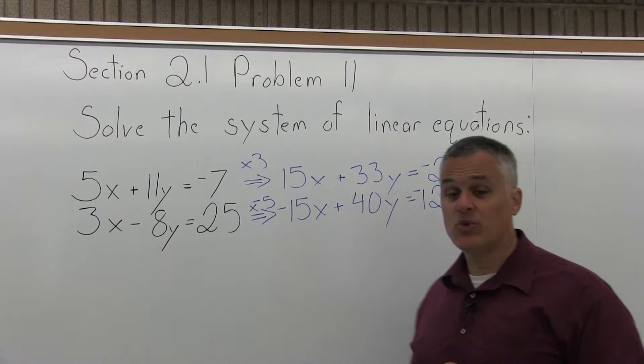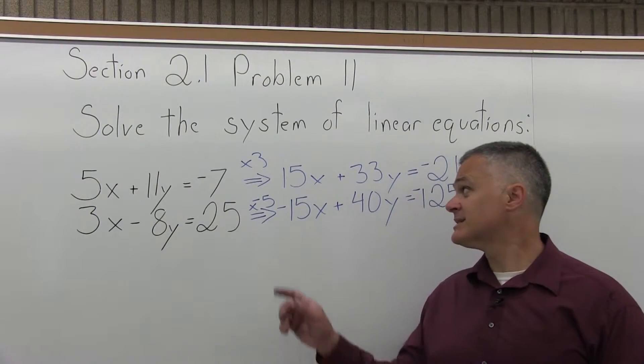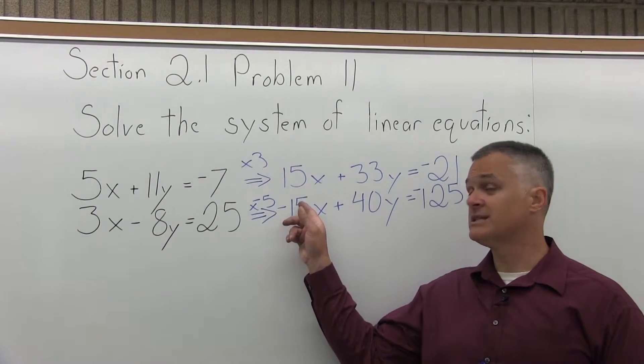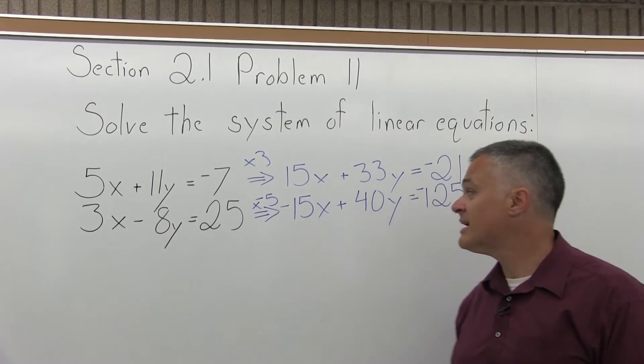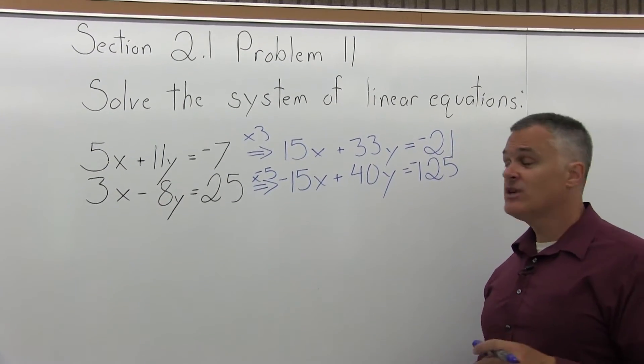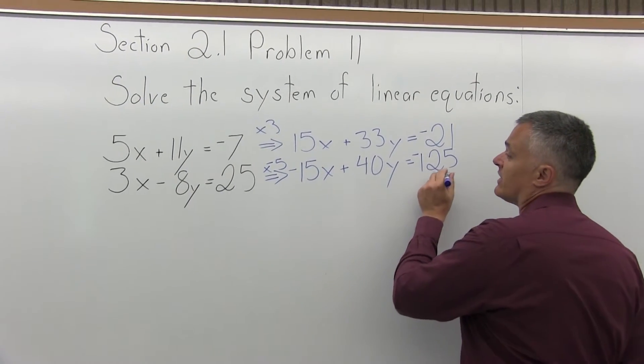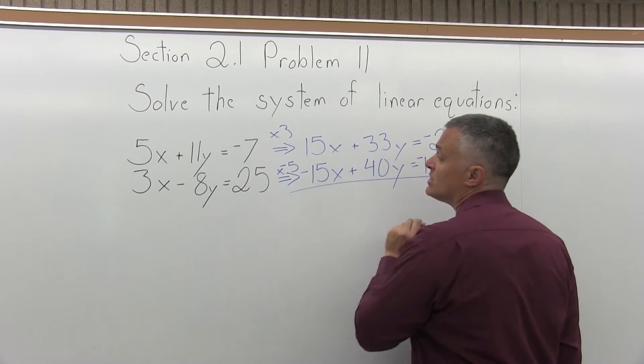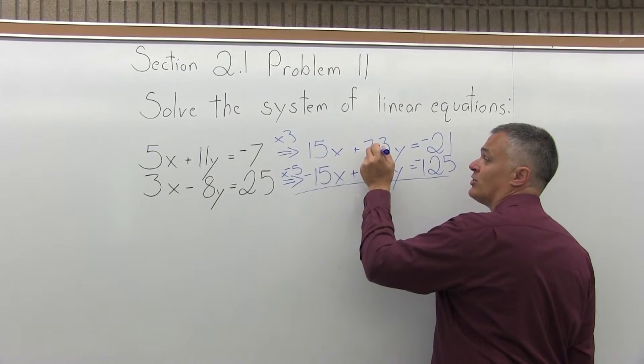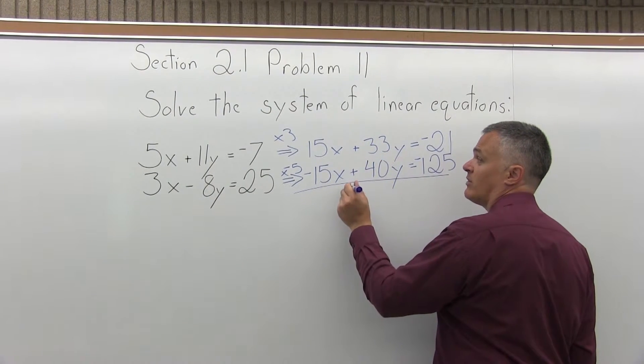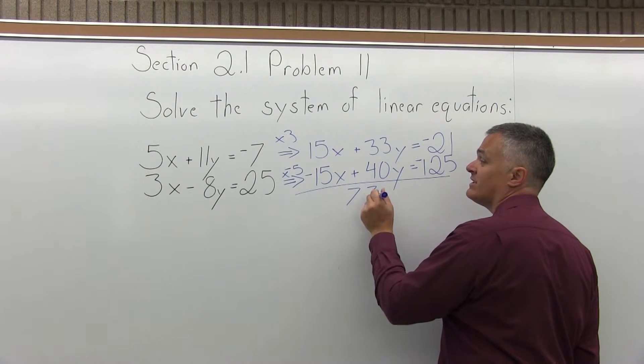So now step 1 is complete. One of my variables has the same number in front, but with opposite signs. I have a positive 15x and a negative 15x. Step 2 is add the equations together to cancel one of the variables. So, 15x and negative 15x will cancel.